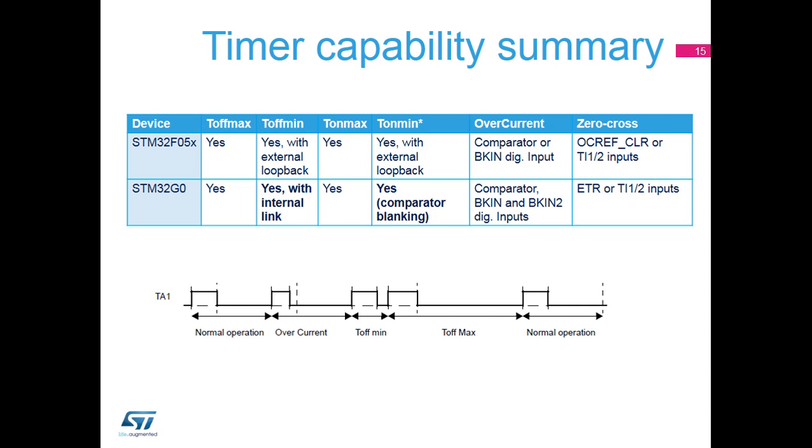When combined with a PWM output from a timer, the cycle-by-cycle current control loop is simplified in the STM32G0 with regards to STM32F0 microcontrollers. No external loopback is required. T-ONMIN and T-OFFMIN are controlled by direct signals connecting the comparators to the timers.